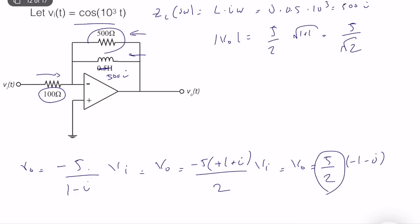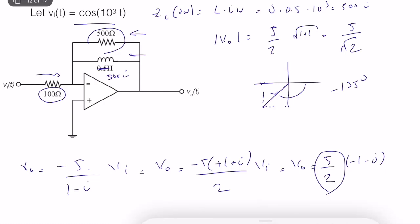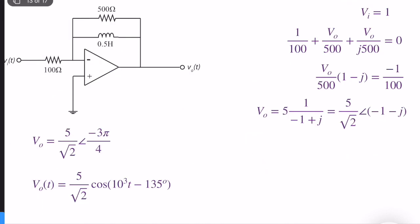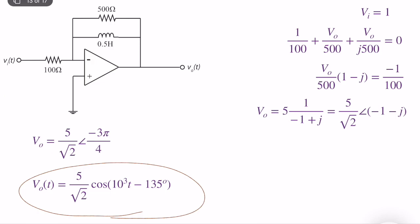What is the phase? The magnitude doesn't have a phase itself, so the phase is the phase of minus 1 minus j. Using a graphical technique, this complex number sits at minus 135 degrees. So Vo of t is equal to 5 divided by the square root of 2, times cosine of 10 to the power 3 t minus 135 degrees. This is a first-order circuit, and analyzing it using differential equations is much harder than the phasor and impedance domain approach.